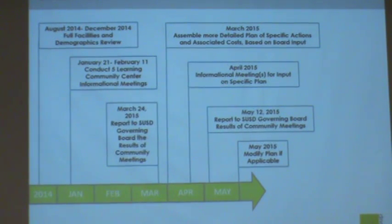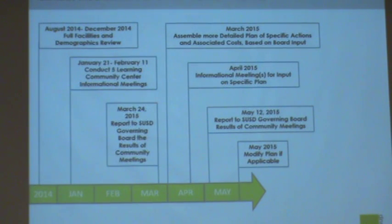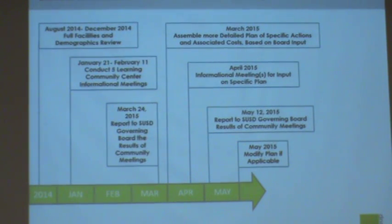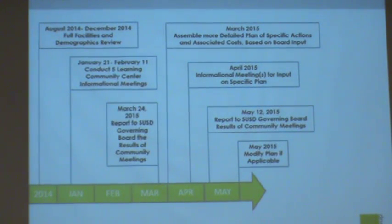After this process, we started community meetings on January 21st and our last community meeting is next Wednesday night. We will then go to the governing board and report our findings on March 24th. Based on governing board input, it will be decided where we go from here. Should any plans be developed, we have an option of coming back, presenting to the community our findings, and reporting back to the governing board.